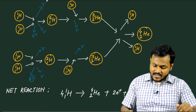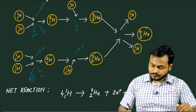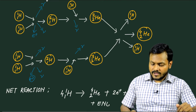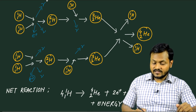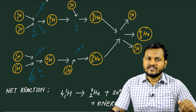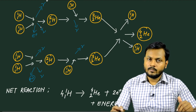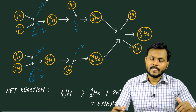In the net reaction of the proton-proton cycle, four hydrogen nuclei combine to create an alpha particle, and in the process two positrons and two neutrinos are released along with huge amounts of energy. The energy can be calculated by looking at the mass difference between the final products and the initial reactants, and it comes out to be around 27 mega-electron volts.